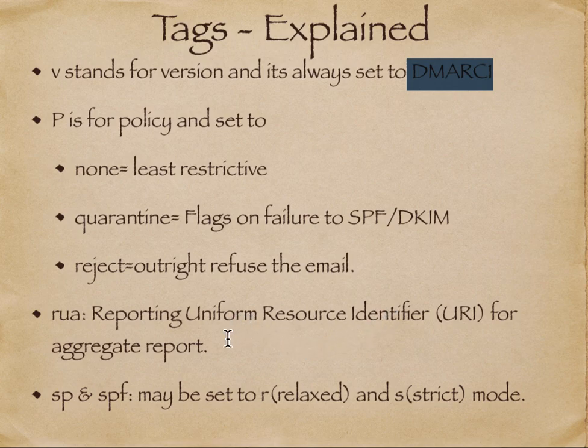'v' stands for version, always set to DMARC1. 'p' is for policy: none is the least restrictive (policy not applied), quarantine sends suspicious email to spam, and reject outright refuses the email. RUA stands for Reporting Uniform Resource Identifier — it sends an aggregated report listing emails received on behalf of your domain that failed SPF or DKIM, so you can investigate and fix those issues.